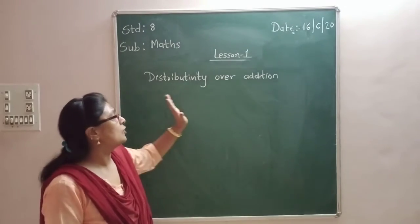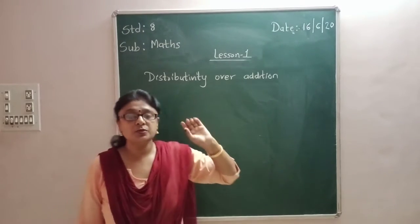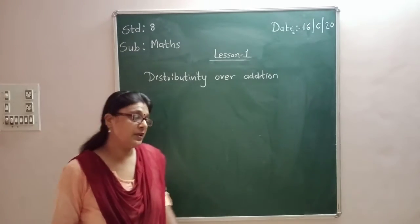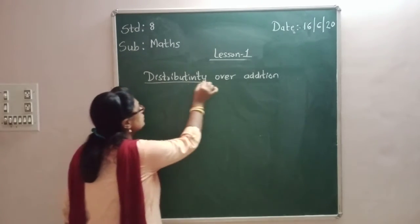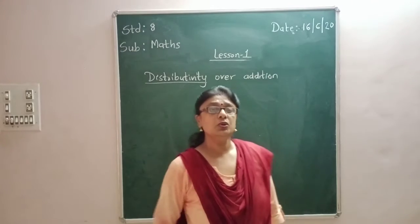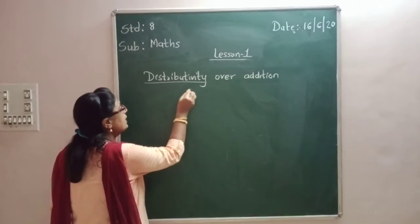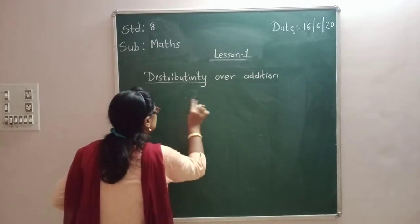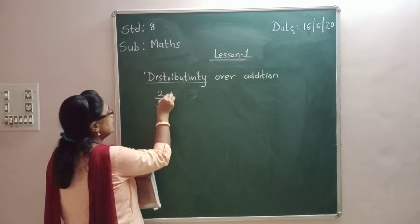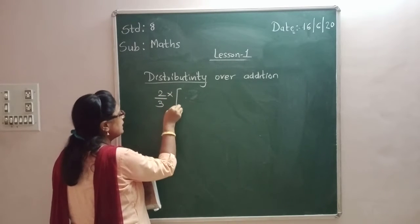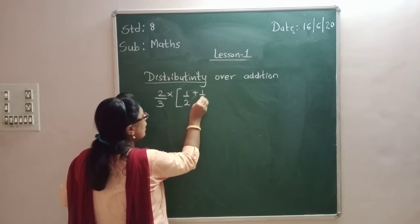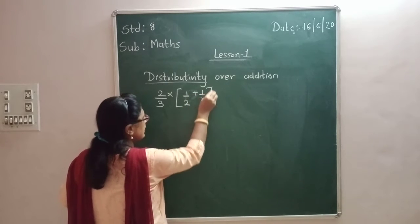Today we are going to start another topic: distributive over addition. Distributive over addition means — what is the meaning of distributivity? Distributivity means to distribute. For example, if I write it this way: 2/3 multiplied by (1/2 + 1/3).